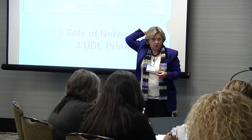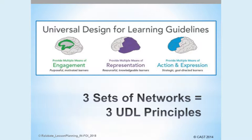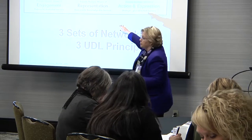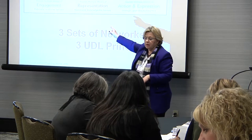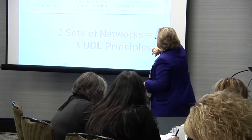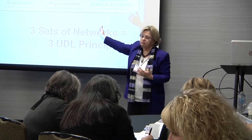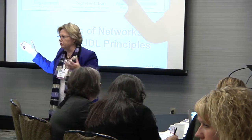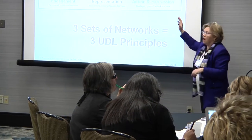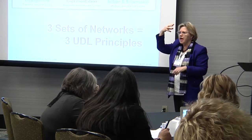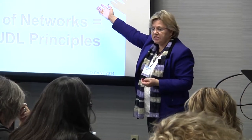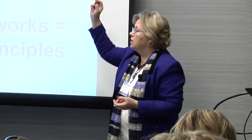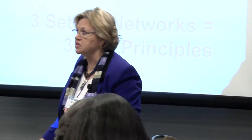Another principle has to do with the recognition networks, located towards the back of our brains. The recognition networks are about how you perceive, understand, and assign meaning to your environment. The UDL principle associated with the recognition networks is to provide multiple means of representation. The third principle has to do with the front part of our brains — the neural networks that help us strategically plan and demonstrate what we know. The UDL principle there is to provide multiple means of action and expression.